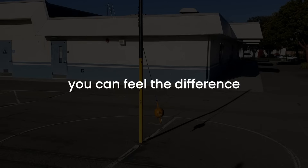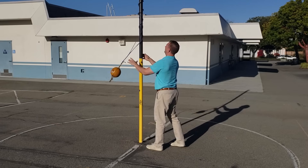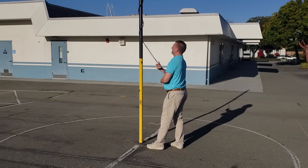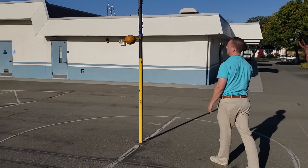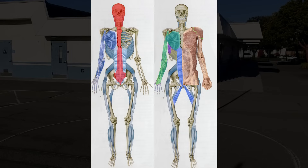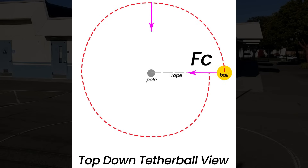Back to tetherball. The equipment is simple: you have a pole, a rope, and a ball. The human body is a little more complex, but think of the rough equivalents as the spine, connective tissue, and your fist. There are two main physical principles I want to discuss: centripetal force and angular velocity. If you took the rope away, the ball would fly off in a straight line — the rope is pulling the ball towards the pole; that's centripetal force.